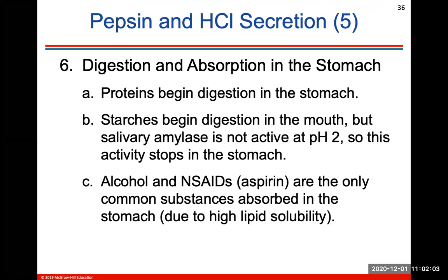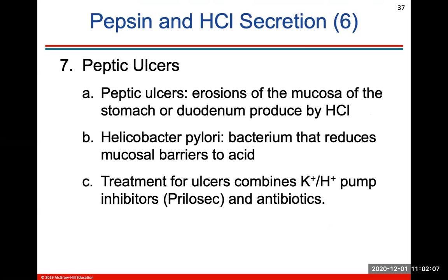A peptic ulcer is any erosion of the mucosa lining of the stomach or the duodenum produced by hydrochloric acid. Helicobacter pylori is a bacterium that reduces mucosal barriers to the acid. Treatment for ulcers usually combines a proton pump inhibitor and an antibiotic — that's what Prilosec is.